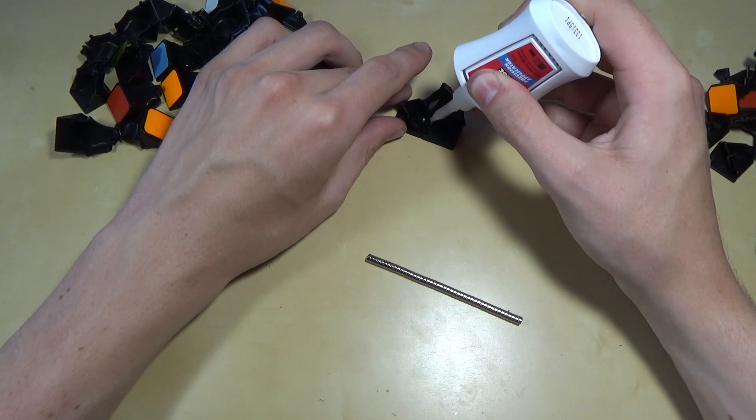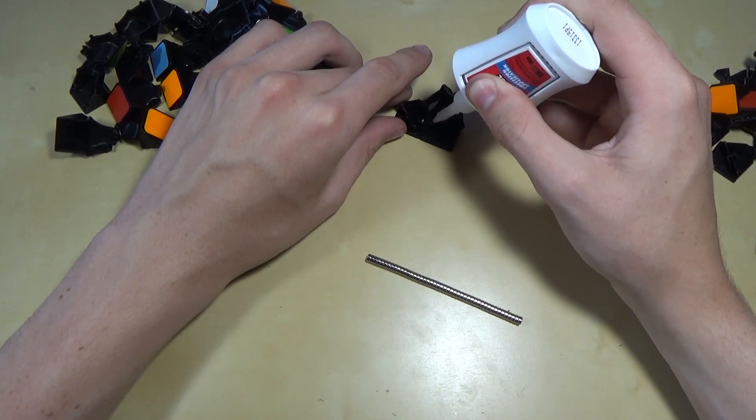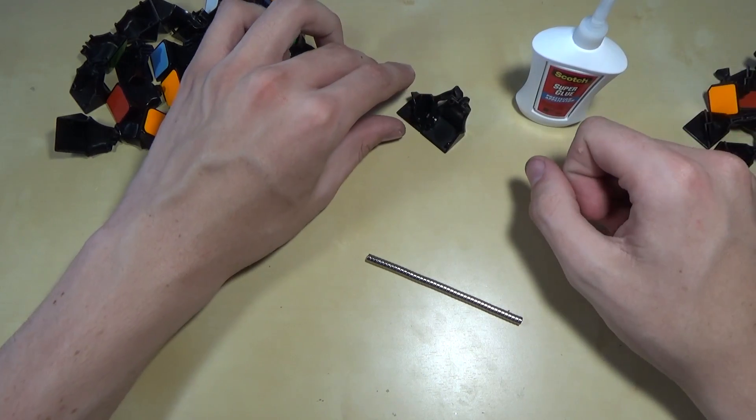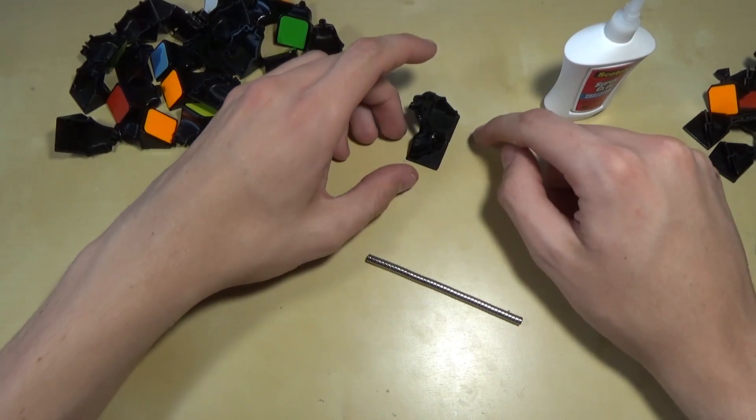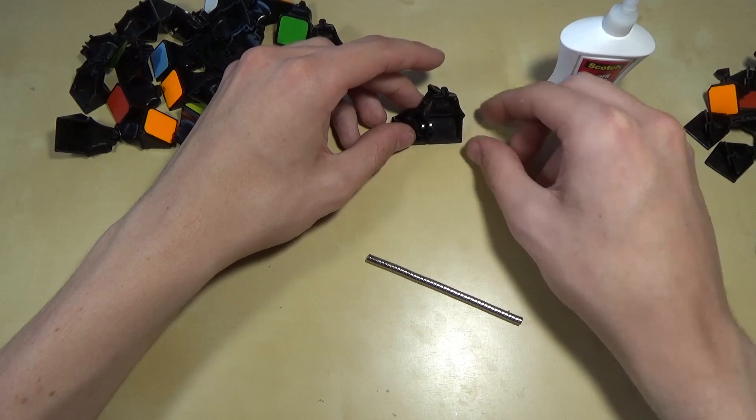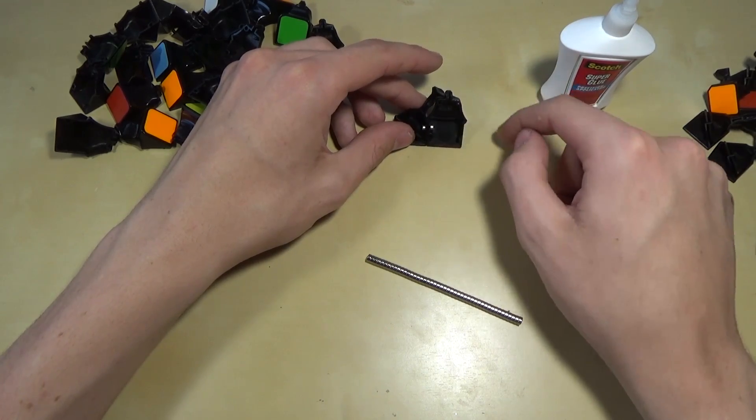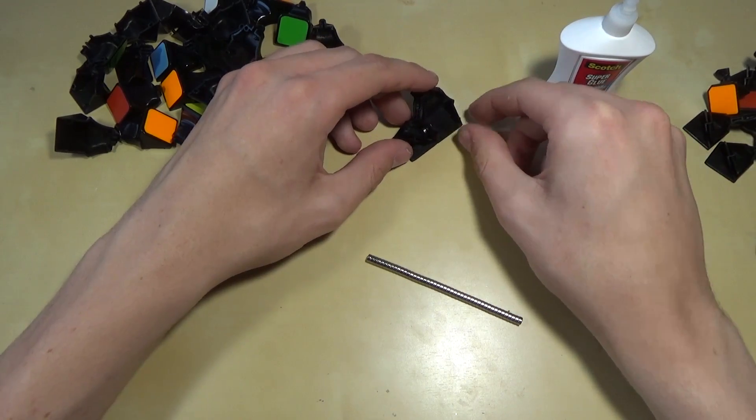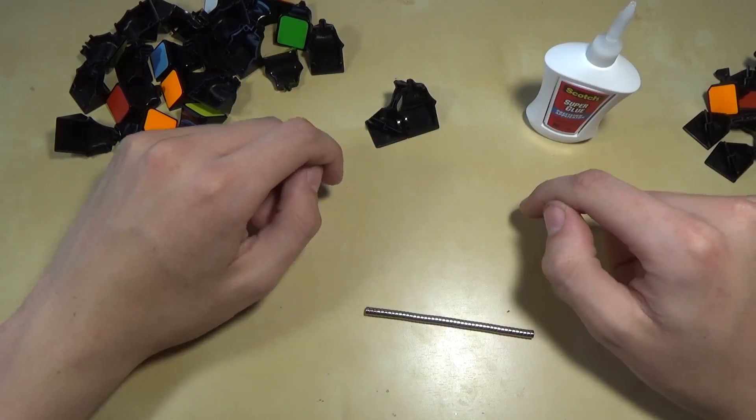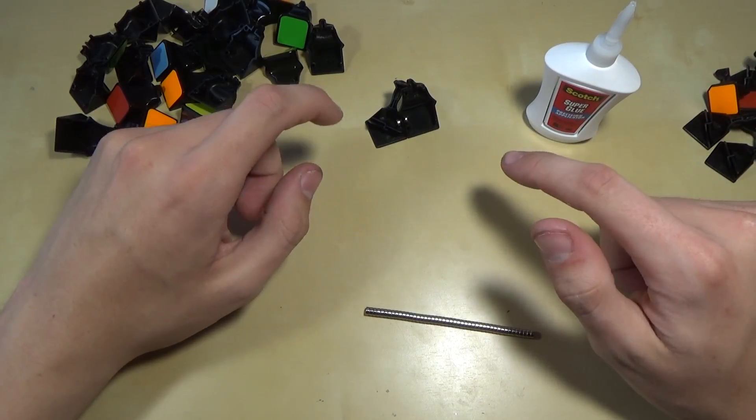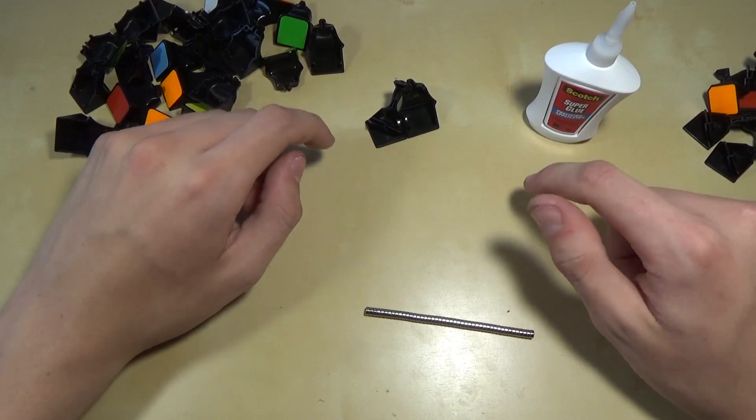Now after waiting a good 10 or 20 seconds or so, I usually do it not even that long. What you want to do is kind of make sure everything's lined up, make sure the magnets are perfectly aligned with each other inside of there, and make sure the pieces are perfectly lined up. And now what you can do is glue the other magnet on. Now this is our first pair of pieces, and this is what we're going to be basing every single one of the other pieces on.